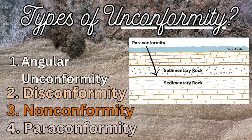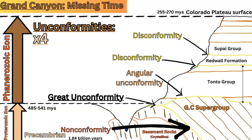Then you have a paraconformity, which is not as common. It is the same as a disconformity but there is limited or no evidence of erosion between the two rock strata, making it very difficult to establish that there is an unconformity because you can't see the uneven erosional surface. The Grand Canyon has four areas where there are unconformities, ranging between disconformity, angular, and nonconformity types — all exposed thanks to the river.